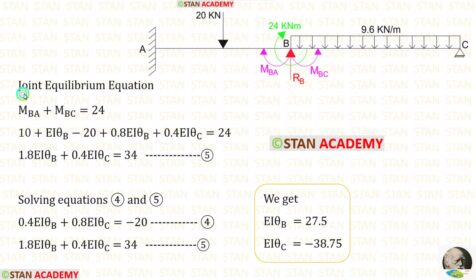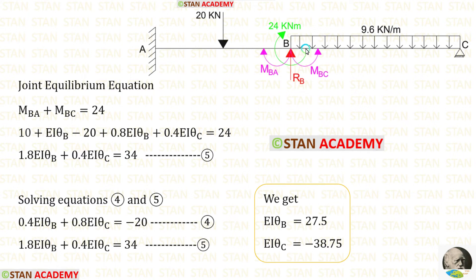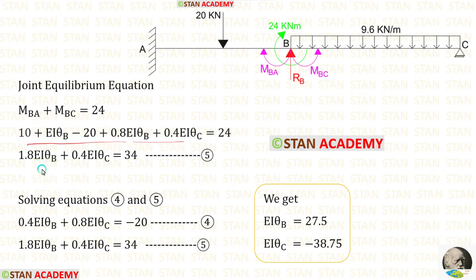Now let us make the joint equilibrium equation. At joint B, there are two moments: M_BA and M_BC. The summation of these two moments should be equal to the couple 24 kNm, so M_BA + M_BC = 24. Since the couple is acting in the clockwise direction, we apply 24 as positive. Let us substitute the expressions for M_BA and M_BC from the slope deflection equations and simplify, keeping numerical terms on the right side. Let us call this equation number 5.